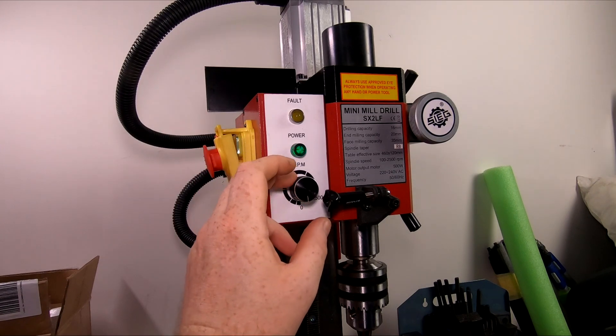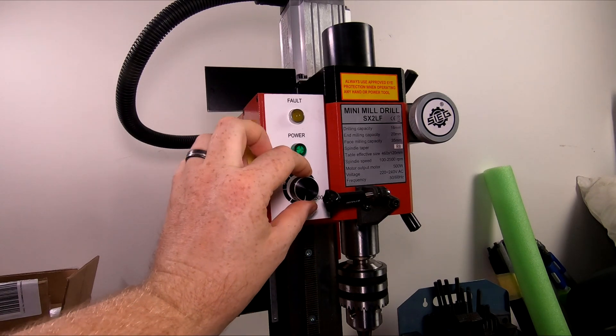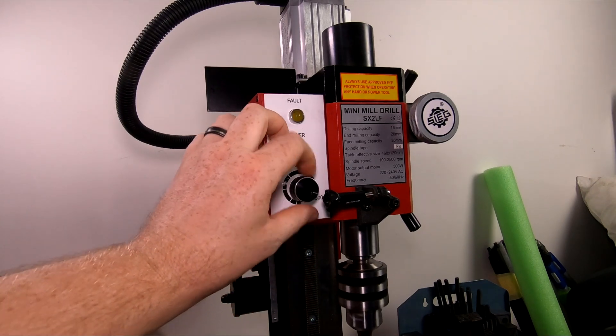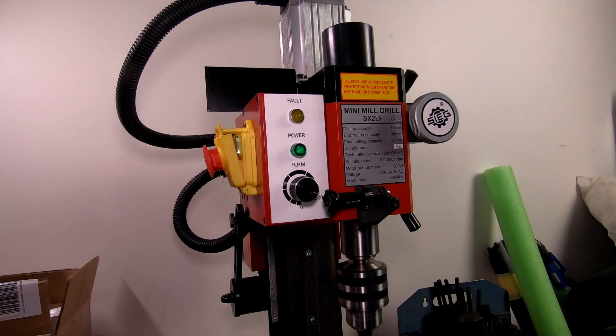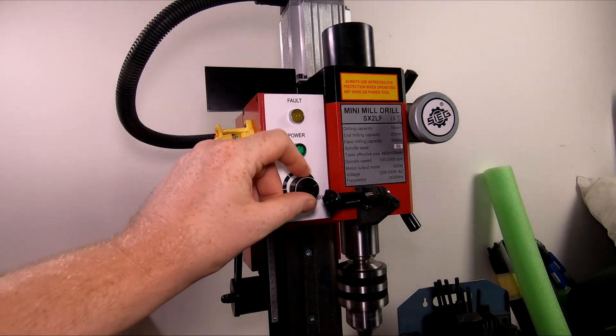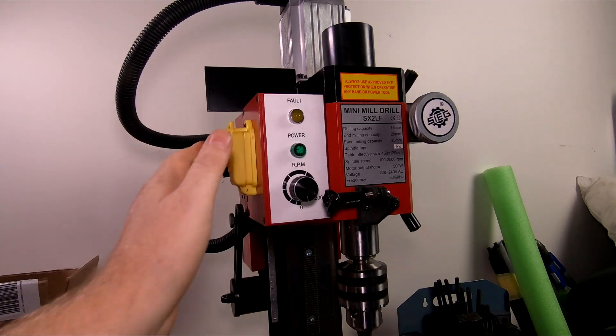You've got your speed control, which goes from 0 to 2500 RPM. It's actually really quiet. Well, that's it at full power. You can barely hear it. So turn that back off. Kill switch it.